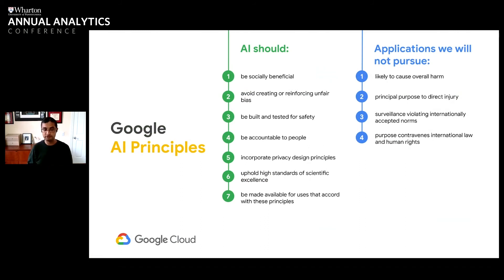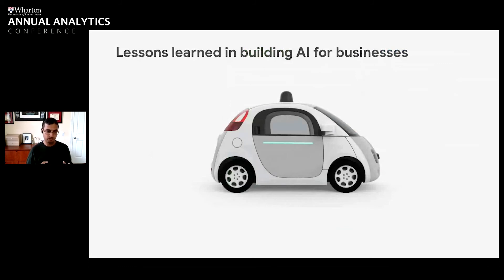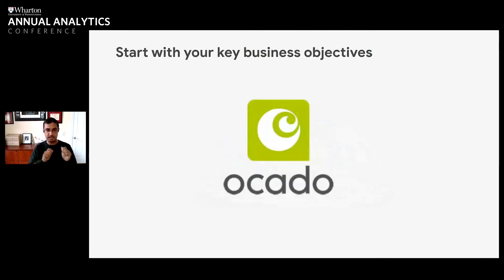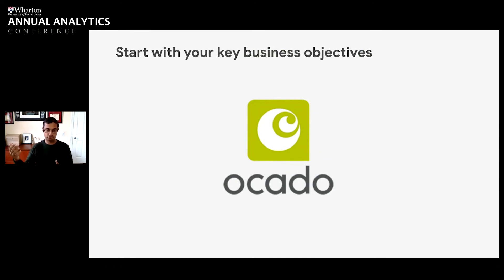I want to take you through a few of the lessons we've learned as we've built AI for businesses. A lot of times people think about big futuristic things like self-driving cars, but AI doesn't have to be that. In almost every organization, you can implement AI somewhere in probably less than six months and actually have it start to make a difference. The first lesson is to start with your business objectives and figure out where you can apply AI to meet a goal that is key to your business. A company called Ocado is a great example — a grocery delivery company in the UK that applied AI for everything from warehouses to customer service, and saw a huge increase in customer satisfaction.